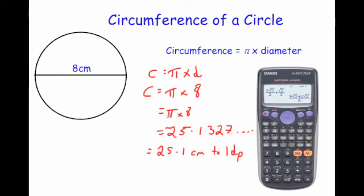So to find the circumference of a circle you just do pi times diameter — pi times 8 in this case — and you get 25.1 centimetres to one decimal place.